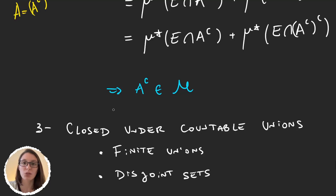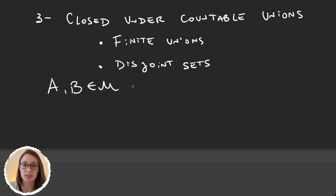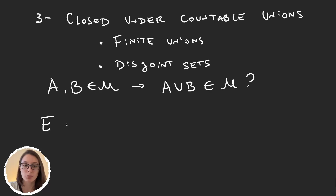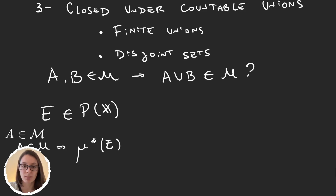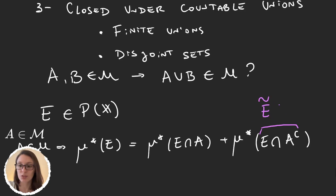So let's start by proving that M is closed under finite unions. For this, just take two elements A and B in M, and what we want to prove is that A ∪ B is an element in M. To prove that a set is measurable, just take some set E in the power set of X. Now because A is a measurable set, this gives us that the measure of E is equal to the measure of E ∩ A plus the measure of E ∩ A^c. And now just call this set E ∩ A^c equal to Ẽ.